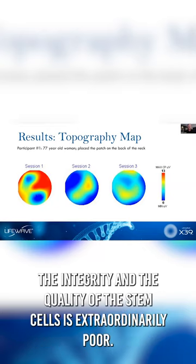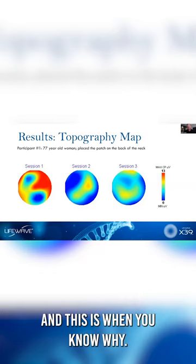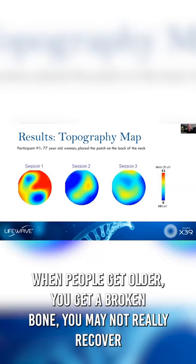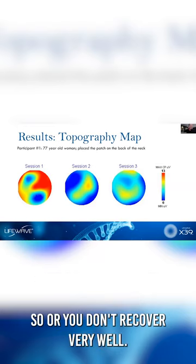The integrity and the quality of the stem cells is extraordinarily poor. And this is why when people get older, you get a broken bone, you may not really recover. Or you don't recover very well.